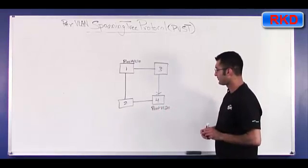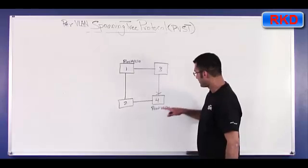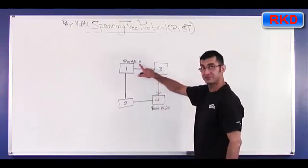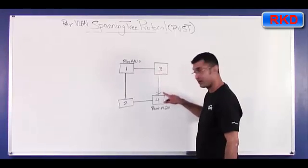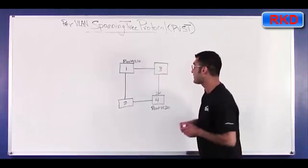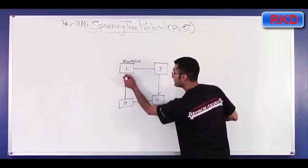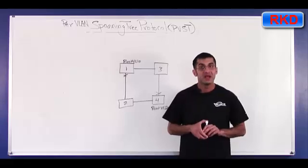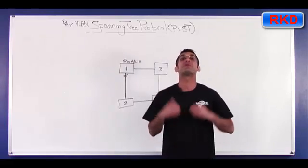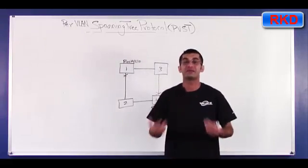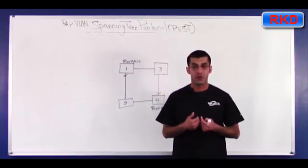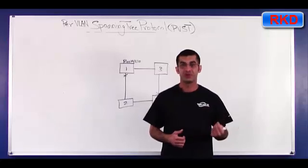This way, since this is root for VLAN 20 and this is root for VLAN 10, VLAN 10 traffic would be blocking here, and VLAN 20 traffic might be blocking here. So each link is blocking for a separate VLAN. However, it is being used for some traffic. So you're not wasting the bandwidth completely. You're at least using each link for VLAN 10 or VLAN 20 traffic.